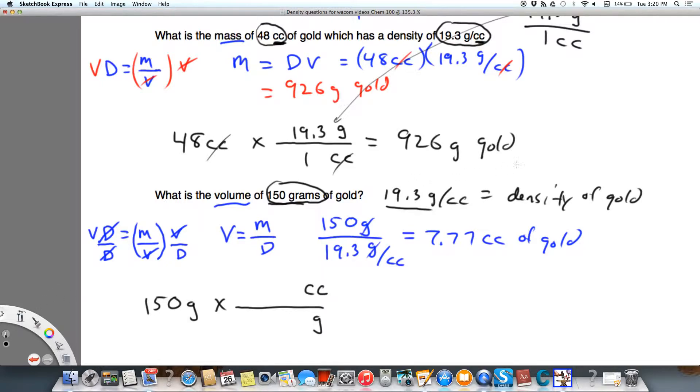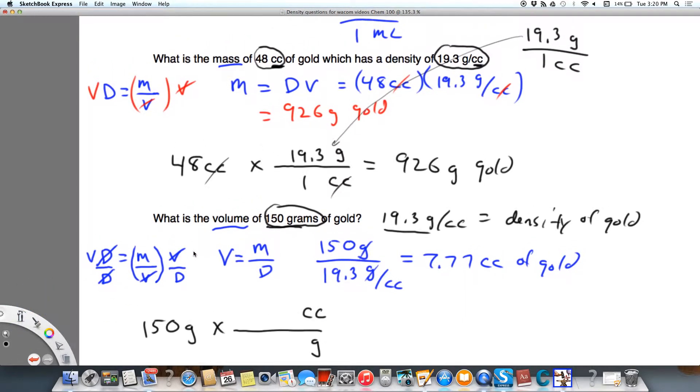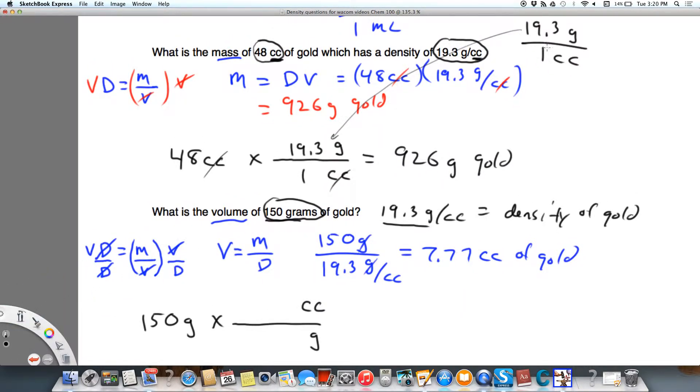Again, we know that from up above, 19.3 always goes with grams. So that's going to go on the bottom this time, because I'm not separating 19.33 and grams. Got to keep those together. And the 1 is going to always go with the cc's. So I'm taking this conversion factor up here, density, and flipping it over. Notice, it comes out the same as what I have here, 150 divided by 19.33. This is the same as saying 150 divided by 19.33.